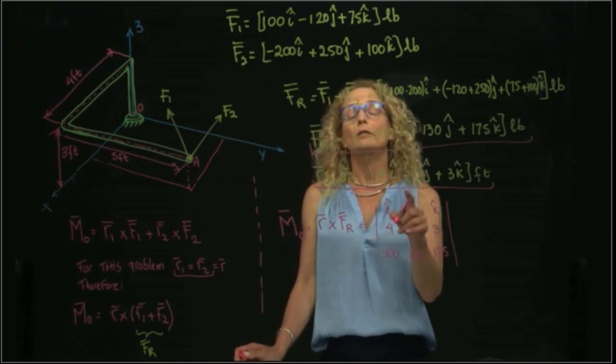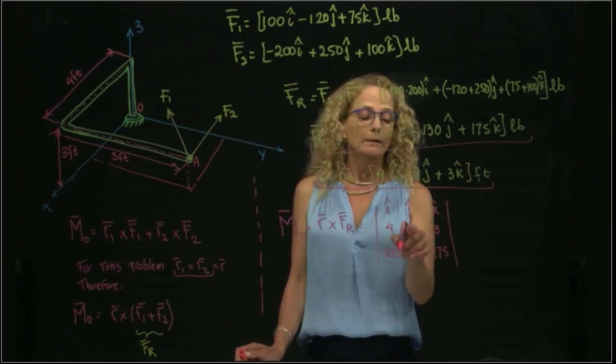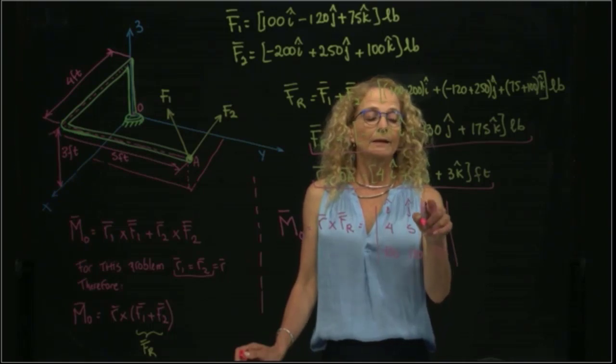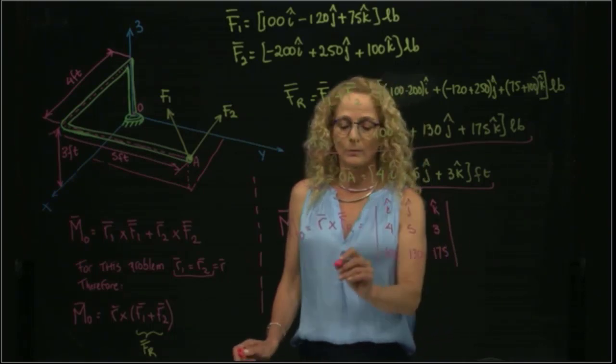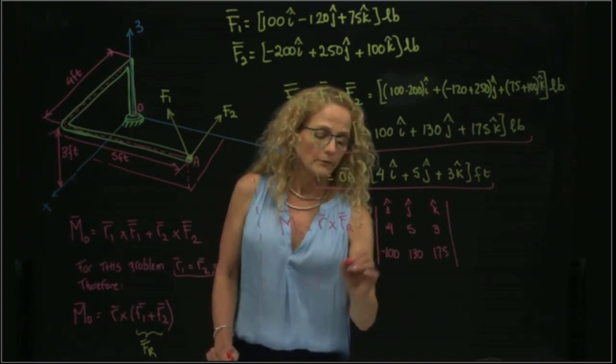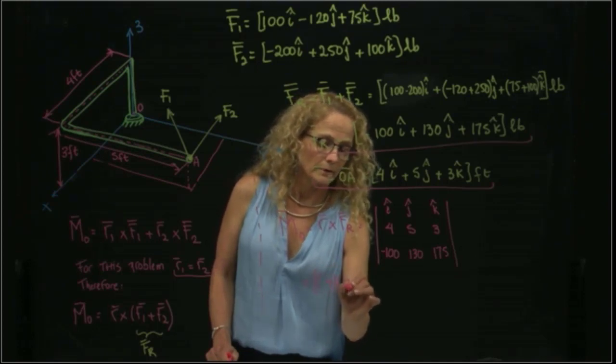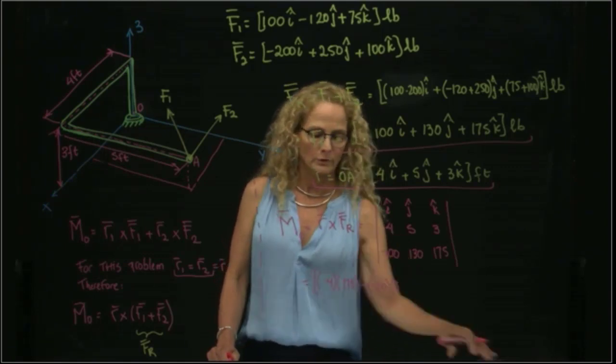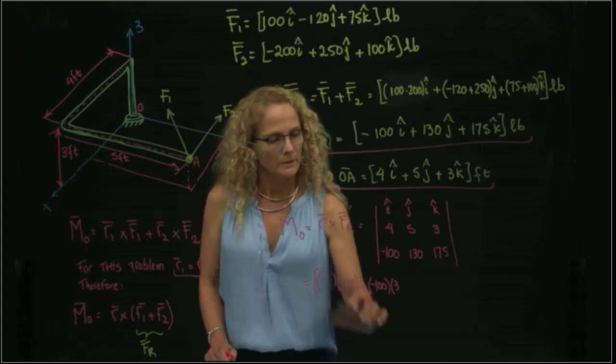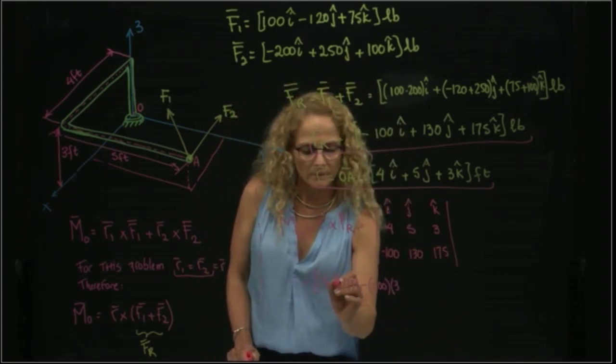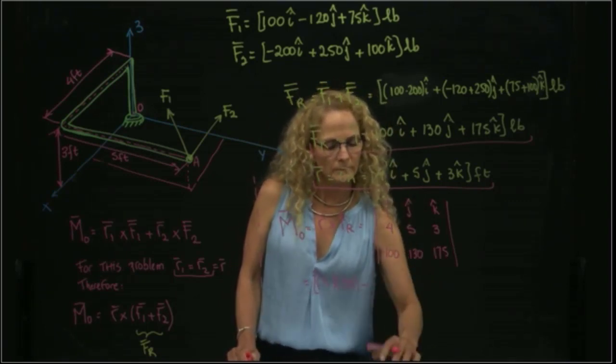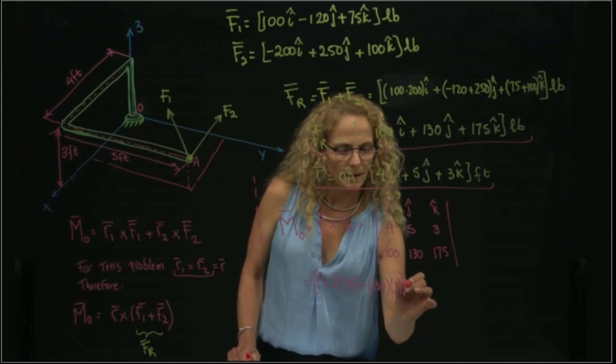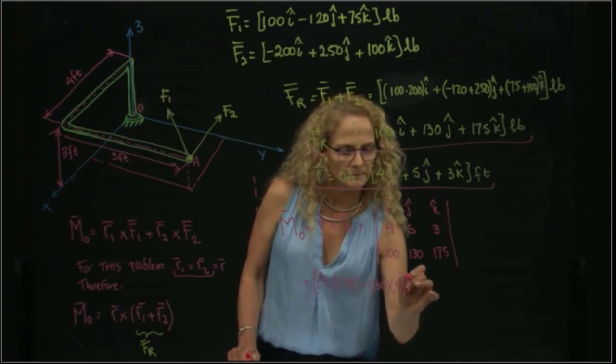With math, you remember that this cross product, you take the I and then take this little determinant. Then take negative J and this determinant that is left, and plus K times this determinant. For I, we have 5 times 175 minus 130 times 3. This will be in I.